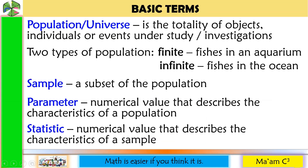Let us define some terms. Population or universe is the totality of objects, individuals, or events under study or investigation. We have two types of population: finite and infinite. Finite — example: fishes in an aquarium, you can count them. Infinite — fishes in the ocean, you cannot count them. A sample is a subset of the population. A parameter is a numerical value that describes the characteristics of a population, while a statistic is a numerical value that describes the characteristics of a sample.